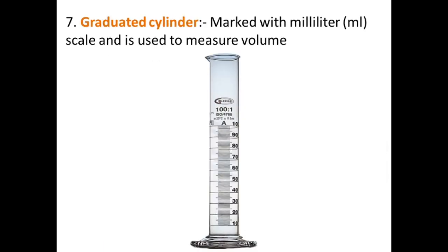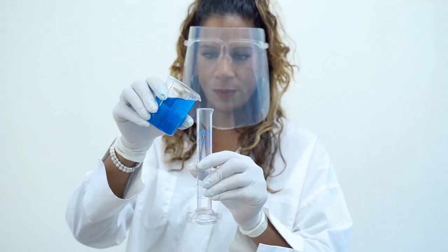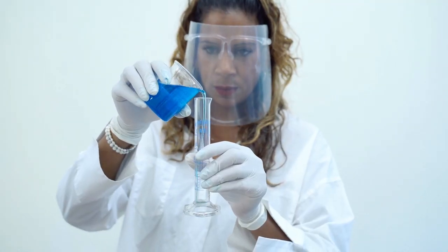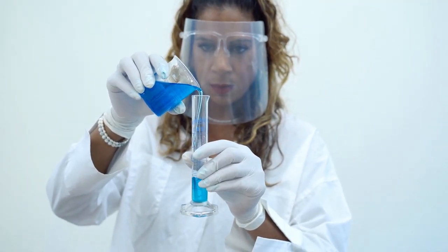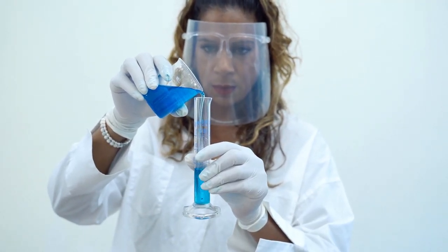The graduated cylinder is marked with scale markings and is used to measure the volume of liquids.